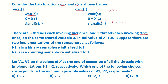Suppose there are two implementations of the semaphore. Implementation 1: s is a binary semaphore initialized to 1. Implementation 2: s is a counting semaphore initialized to 2. Let v1 and v2 be the values of x at the end of execution of all threads with implementations 1 and 2 respectively.